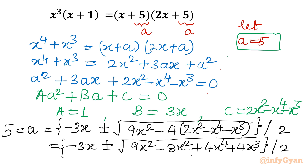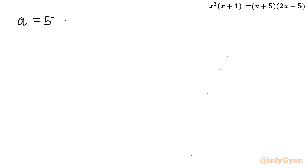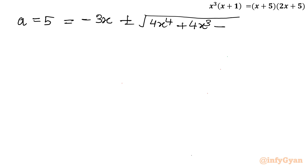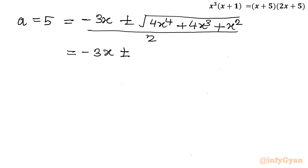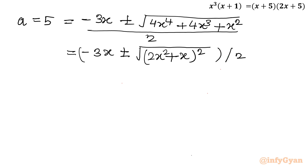Simplifying: 9x² − 8x² gives x², so we have x² + 4x⁴ + 4x³ inside the square root. This is a perfect square: it equals (2x² + x)². Let us verify: (2x²)² = 4x⁴, x² is there, and 2ab gives 4x³. So taking the square root cancels the radical, leaving minus 3x plus or minus (2x² + x), all divided by 2.